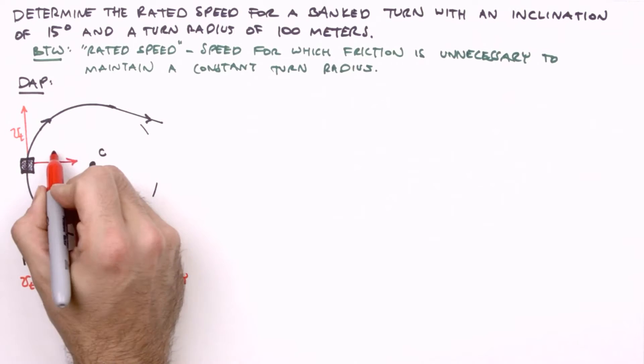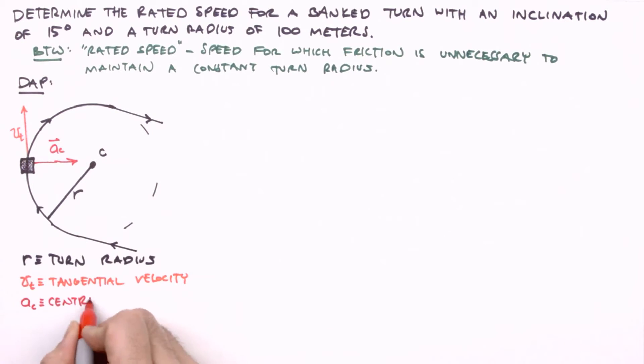Lastly, we'll indicate the direction of the centripetal acceleration of our vehicle. Oops, forgot an arrow. Now, a couple forces are acting on our vehicle, keeping it in uniform circular motion, and that means we need a free body diagram.